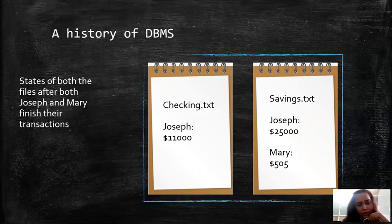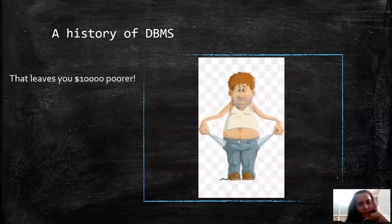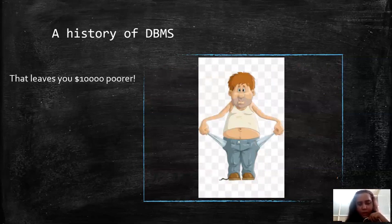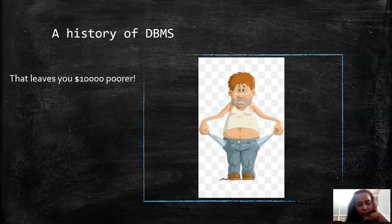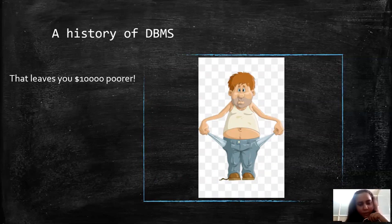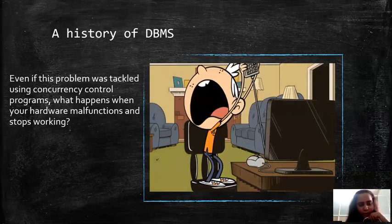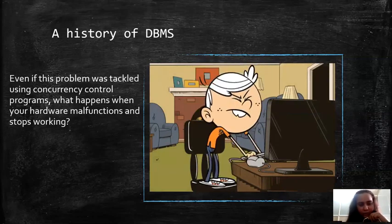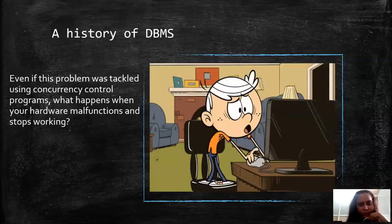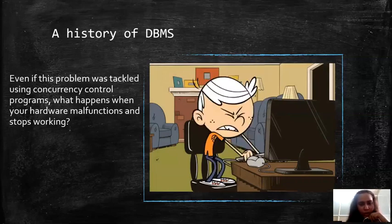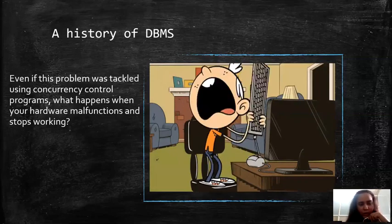When Mary deposits five dollars into her savings account, it is visible as 505 dollars, but Joseph's balance remains as it was. It remains 25,000. 10,000 should have been deducted but instead it remains 25,000. Now where does that leave you as the owner of the internet bank? It leaves you 10,000 dollars poorer.